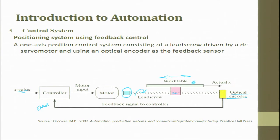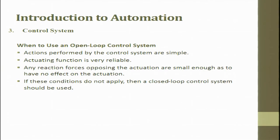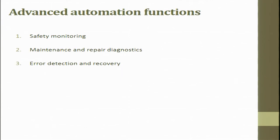For an open loop system, the motor becomes a stepper motor. Use an open loop system when the action performed by the control is simple, the actuation function is very reliable, and the reaction forces opposing actuation are very small. If none of these conditions apply, a closed loop system should be used.